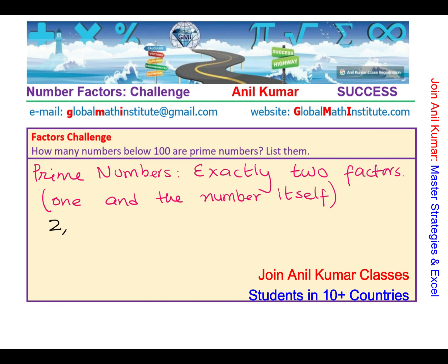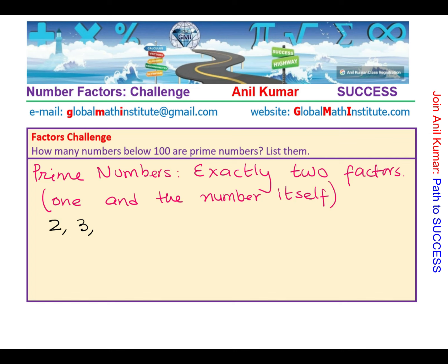For example, 2 can be divided only by 1 or the number itself, which is 2. Similar is the case with 3. But 4 can be divided by three numbers: 1, 2, and 4, so 4 is not a prime number. 5 is a prime number. 6 is even, so it can be divided by 2 also — 6 cannot be prime. 7 is a prime number. 8 cannot be prime; it's an even number. All other even numbers are not prime except 2. So 2 is the only even prime number.